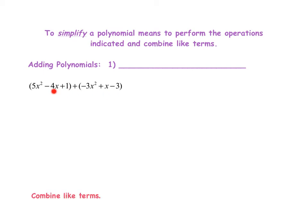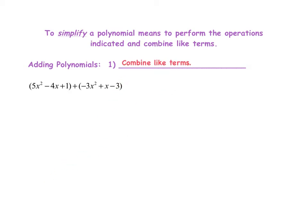This is an example of adding polynomials. You might ask, how do I know it's adding and not subtracting? Because I do see some minus signs here. How we know whether we are adding or subtracting polynomials is by the symbol in the middle, between the two expressions. This one is considered adding the two expressions. When adding polynomials, there is really only one step, and that is to combine your like terms.